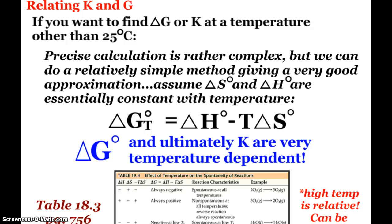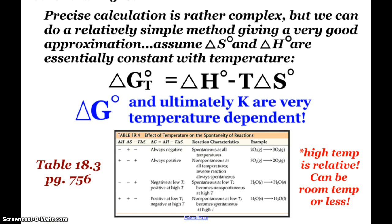The assumption we have to make is that delta S and delta H are essentially constant with temperature. We know that's not perfectly true. Entropy increases as temperature does but it's nowhere near as dramatic as the effect of temperature on K and delta G because they are very temperature dependent.